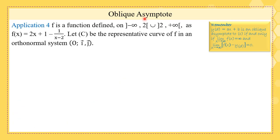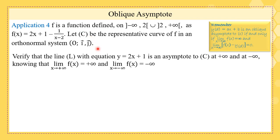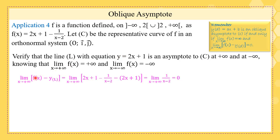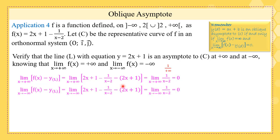Another application about the oblique asymptote: we have a function f whose curve is C. We need to verify that the line L with equation y equals 2x plus 1 is an asymptote to C at plus infinity and minus infinity, knowing that the limit of f at plus infinity is plus infinity and the limit of f at minus infinity is minus infinity. The limit of f(x) minus y of L as x tends to plus infinity is the limit of 1/(x−2), which is 0. Similarly, as x tends to minus infinity, 1 over negative infinity is also 0. So L is an oblique asymptote to C at plus and minus infinity. You don't need to verify the first condition because it's given.